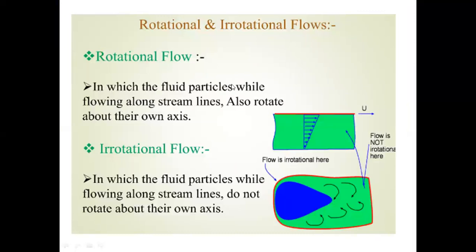The fifth type is rotational and irrotational flow. In rotational flow, the fluid particles flow in a streamline and are also able to rotate on their own axis. In irrotational flow, the fluid flows along a streamline but does not rotate on its own axis. Both follow a streamline path, but rotation about their own axis is what differentiates them.